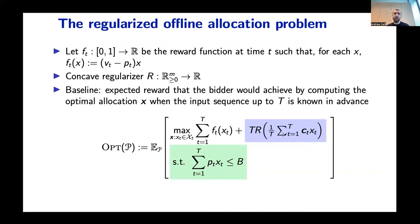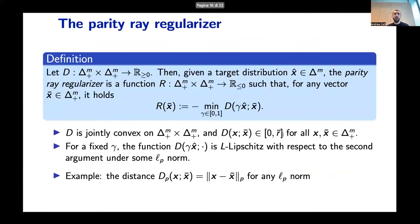Now the question is, how do we pick R to model the distributional preferences that we discussed? One solution, which is what we propose in this paper, is using the notion of a parity ray regularizer. If we select D to be a distance measure over the full dimensional simplex, then given a target distribution X hat, the parity ray regularizer basically takes a projection according to D of our realized distribution of impression X bar over the line segment generated by X hat. So this is like performing a Bregman projection.